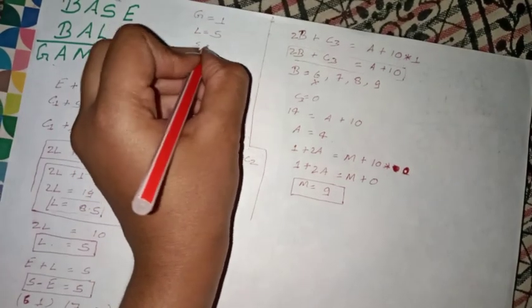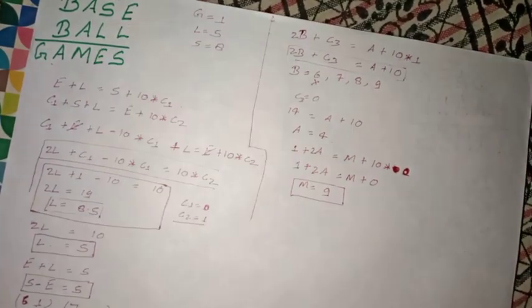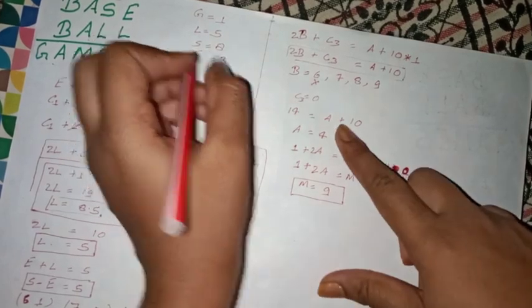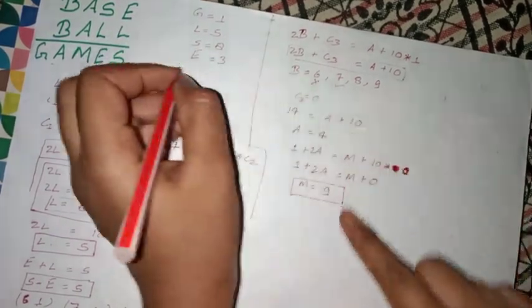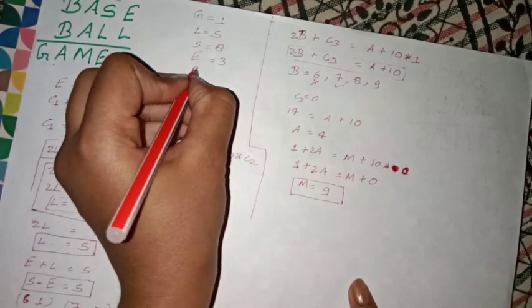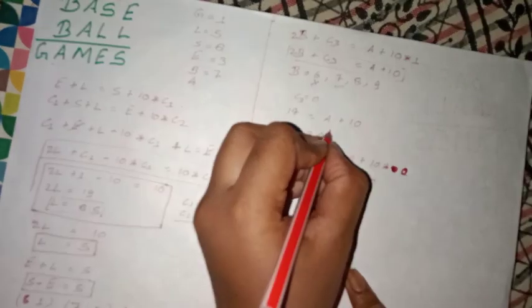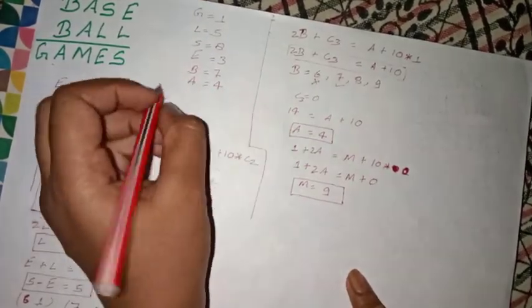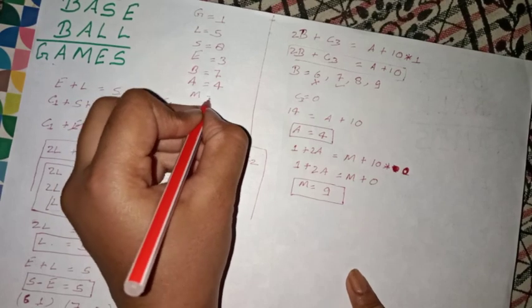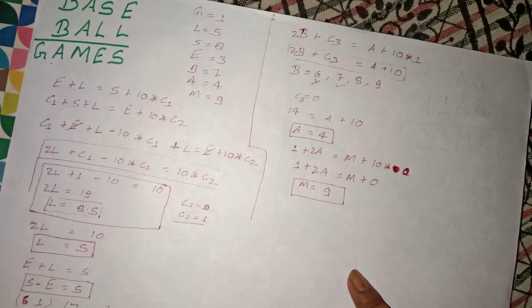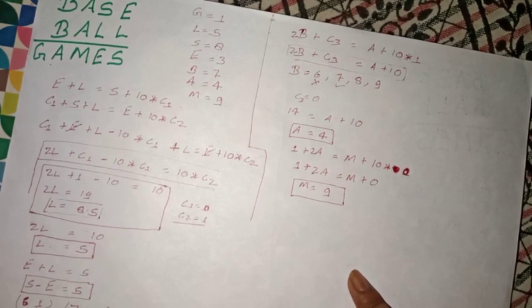So S equals 8, E equals 3, B equals 7, A equals 4, and M equals 9. I hope you understood. Bye.